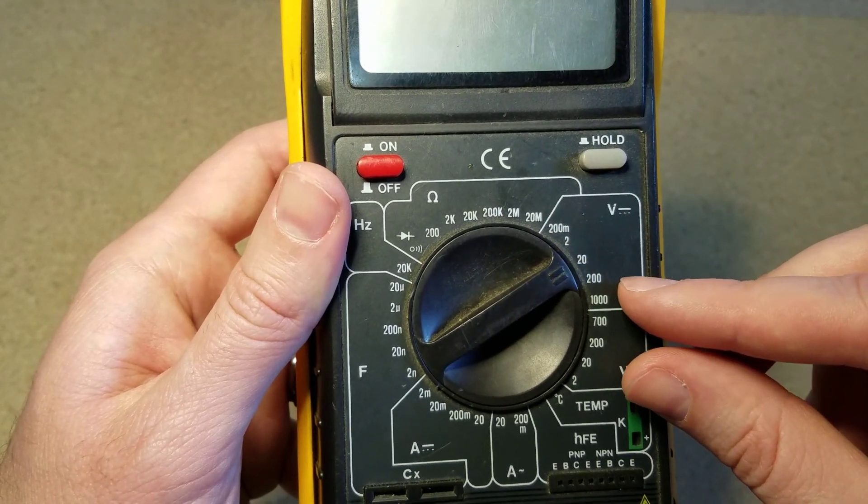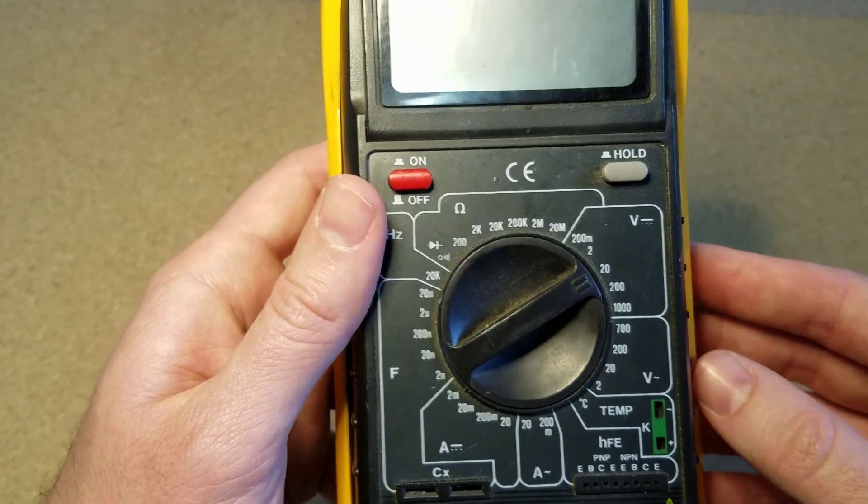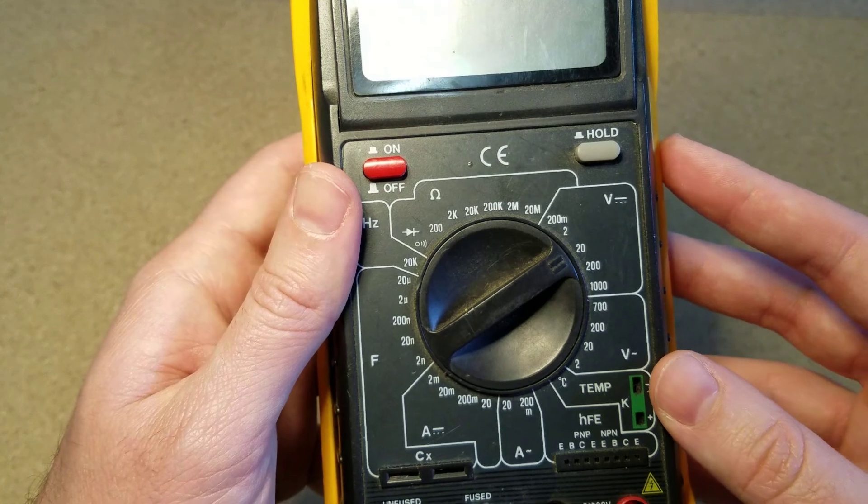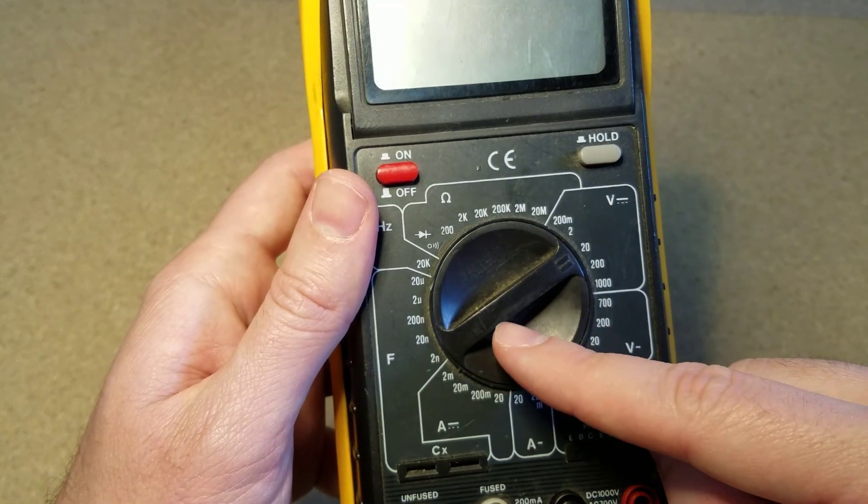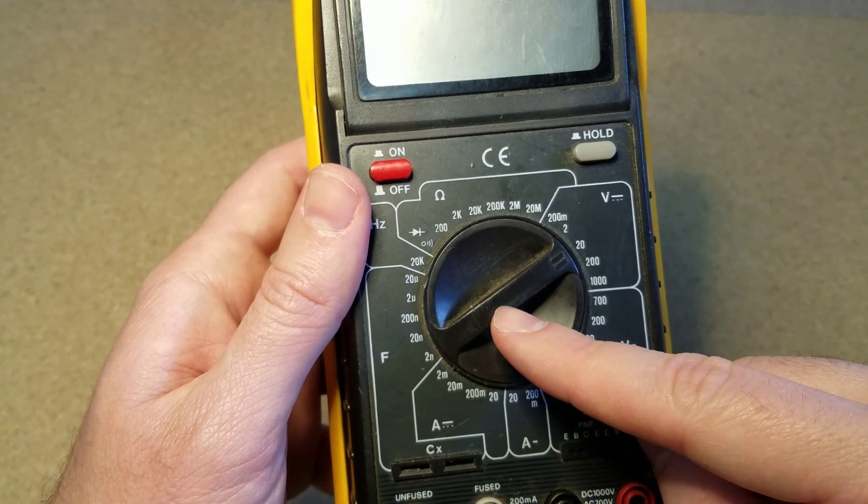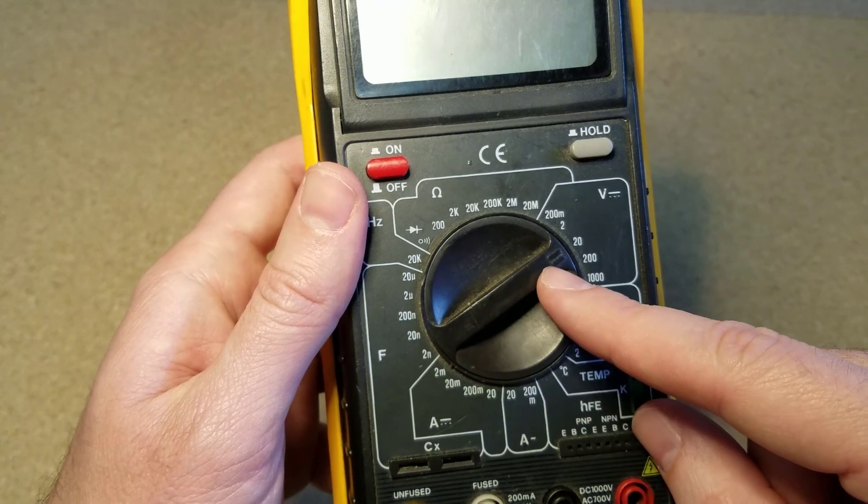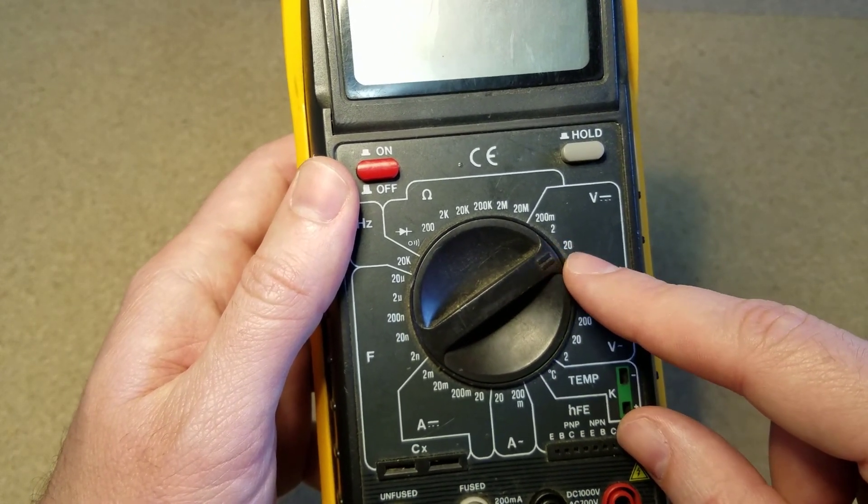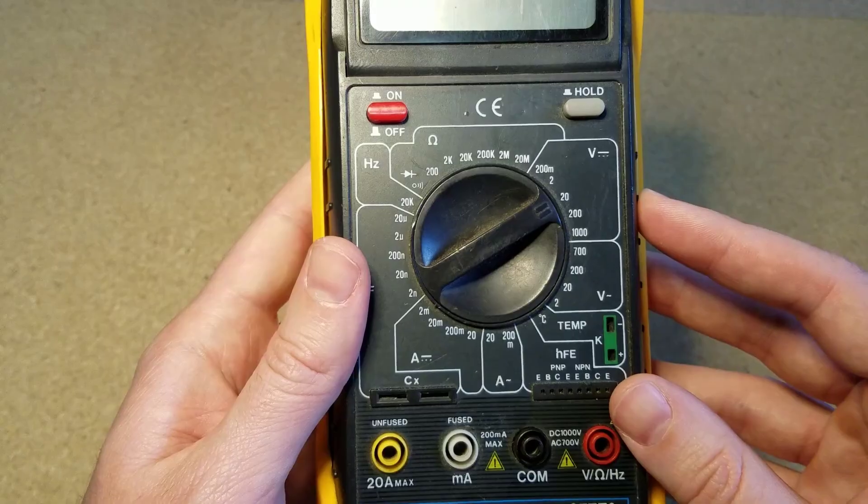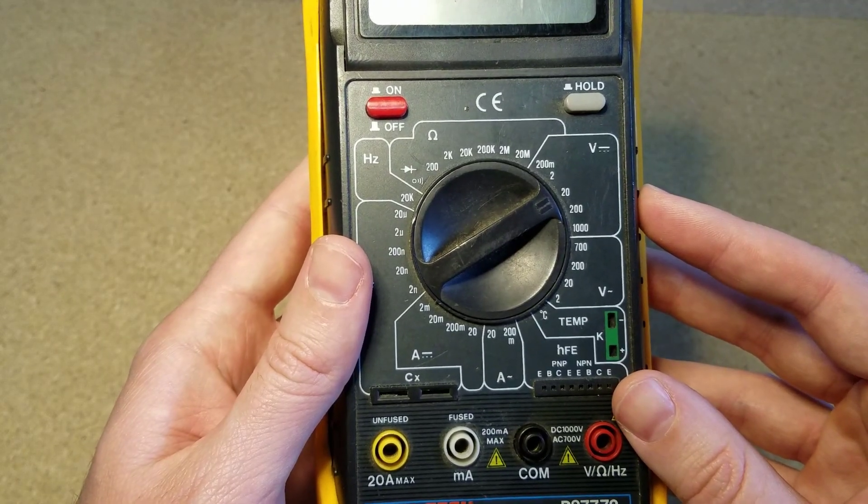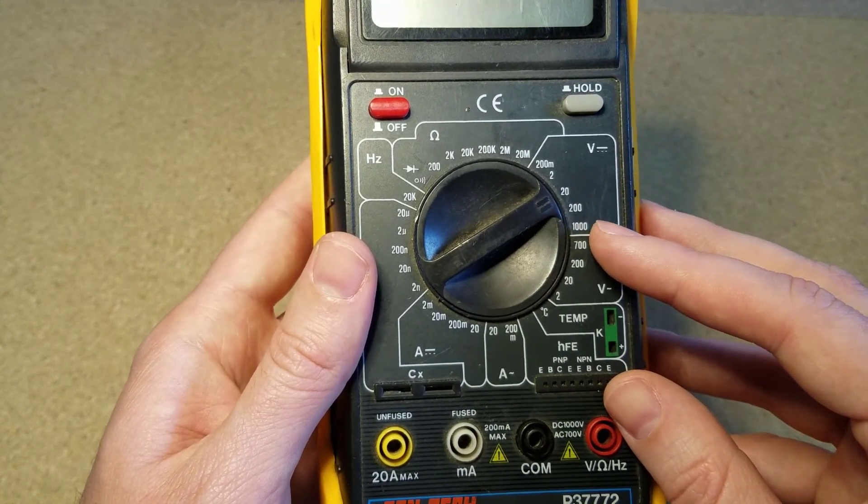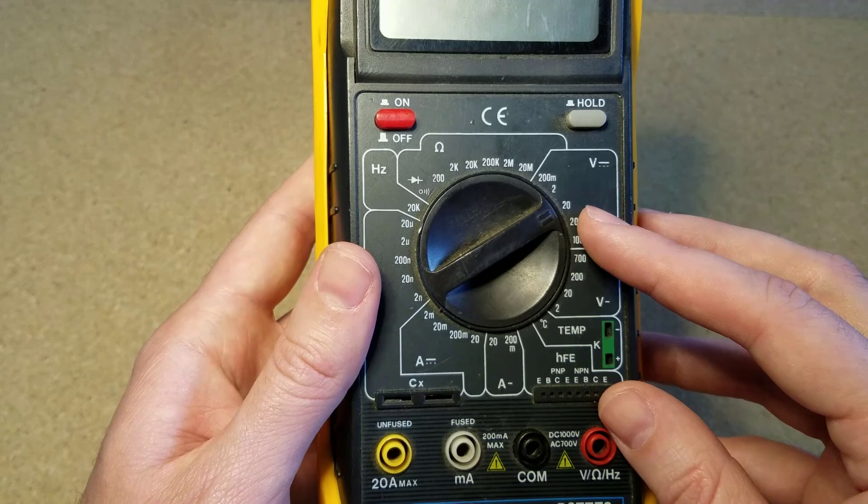This is where the manual ranging comes into play because these numbers represent the range of the voltage that you're measuring. So with the manual ranging meter you have to have a basic idea of the voltage level that you're measuring and you want to set the dial accordingly. So for instance, if you wanted to measure a circuit on your vehicle's 12 volt electrical system, you would want to set the meter to the 20 volt range. Now if you don't really have a good idea of the voltage level that you're measuring, it's always a good idea to start at the highest range and work your way down until you see the precision that you want.